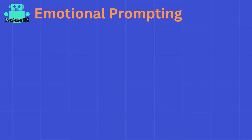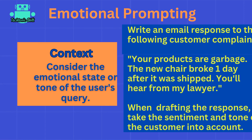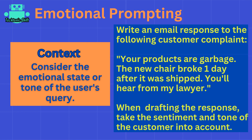Another prompting technique that can sometimes be useful for certain kinds of problems is emotional prompting. The idea here is that the response generated by ChatGPT should consider the emotional state or tone of the user's query. For example, if you ask ChatGPT to write an email response for a customer complaint, the prompt could look something like this. With emotional prompting, we are telling ChatGPT to take the sentiment and tone of the customer into account when drafting its response.